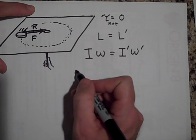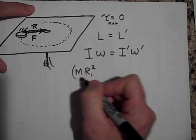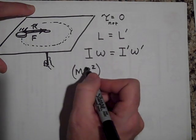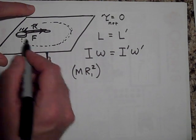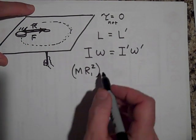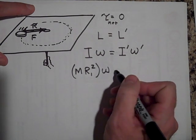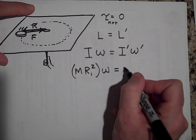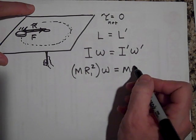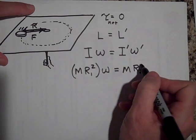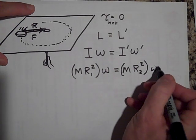Okay, well the I before is going to be m times, let's say r₁ squared. That's the I whenever you have just a point mass rotating around an axis. And omega, we'll just leave it as omega. That will equal the same m, didn't change, it's m, but the second radius might be r₂ squared times omega prime.